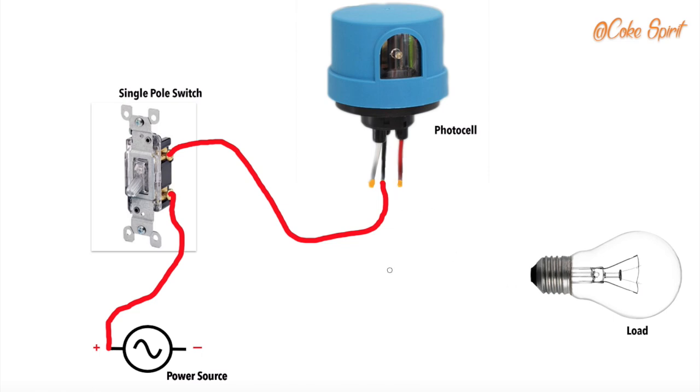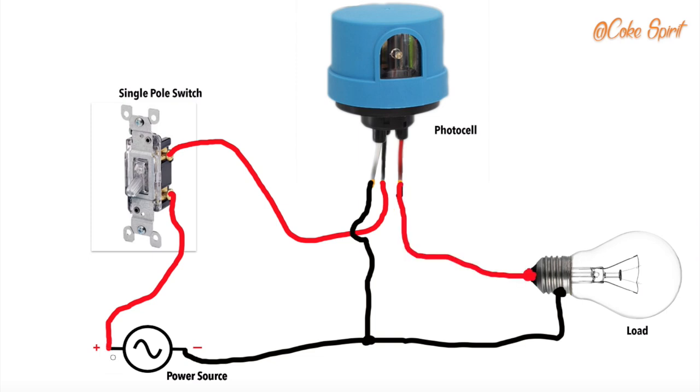We'll bring our negative straight to our load, and also we'll tap off from the negative to the white wire. And then the live should only travel through our switch, from the switch to that black wire on the photocell.